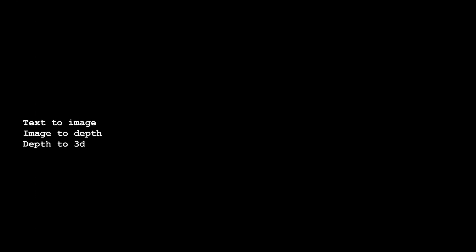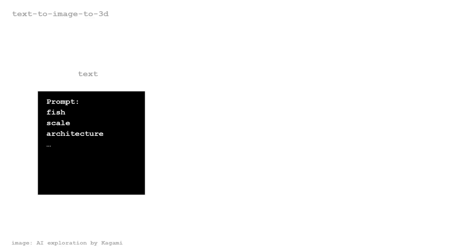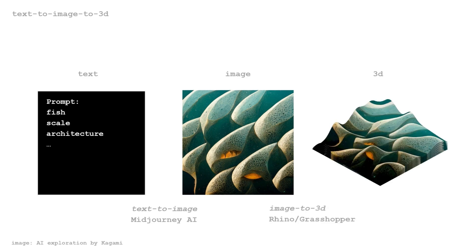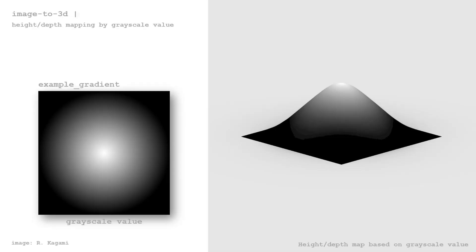The pipeline is: Text-to-Image, Image-to-Depth, Depth-to-3D. Let's start with the text-to-image-to-3D process. Midjourney AI is utilized for the text-to-image process, and Rhinoceros along with Grasshopper is used for the image-to-3D process. For the image-to-3D process, grayscale values determine the depth map for 3D deformation.